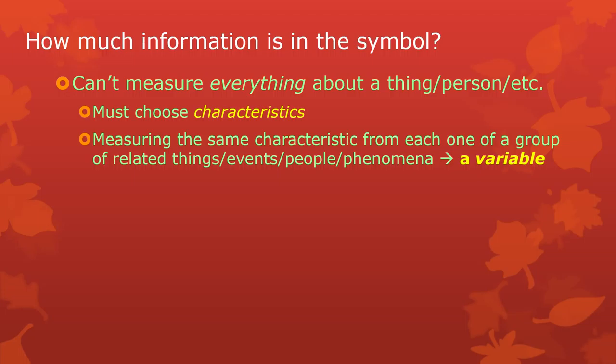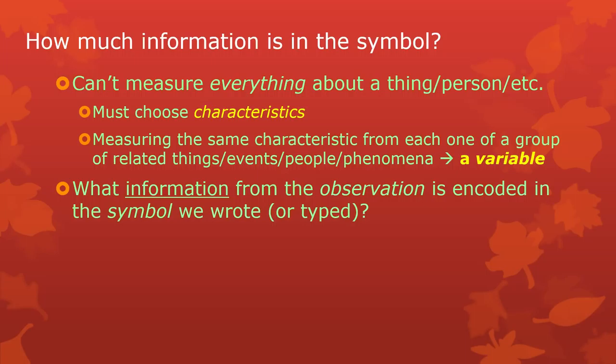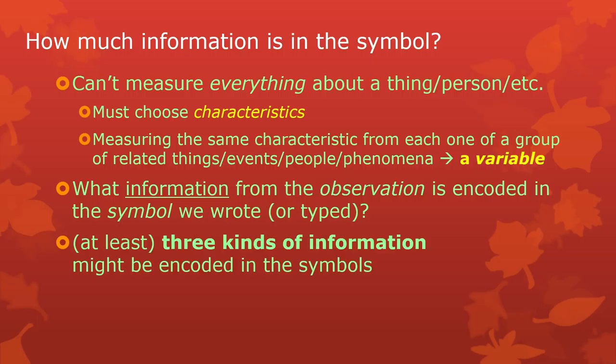I will often say a variable is a characteristic. So critically important is what information and how much of it, from the observation itself and from the thing that we observed, is encoded in the symbol that we wrote down or typed into a computer. That's what we're going to be worrying about for the rest of this lecture.